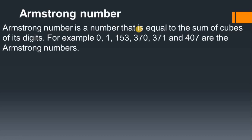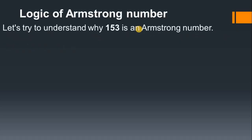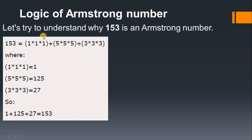An Armstrong number is a number that is equal to the sum of the cube of each of its digits. For example: 0, 1, 153, 370, 371, and 407 are Armstrong numbers. If we pick the number 153, observe that 1 cubed plus 5 cubed plus 3 cubed gives you back the same number. If you get the same number after cubing each digit and adding them, it is Armstrong; otherwise it is not.